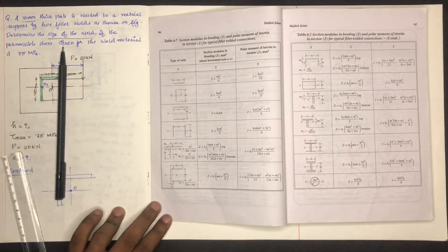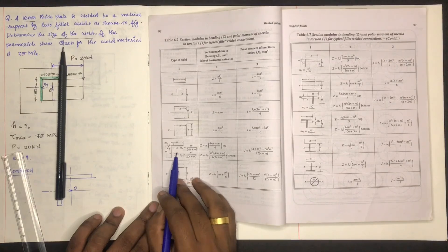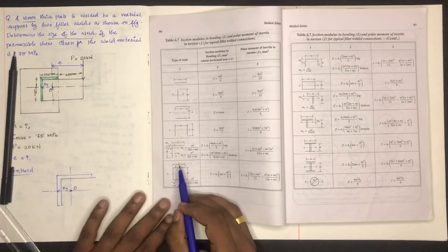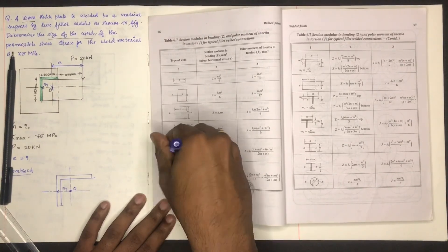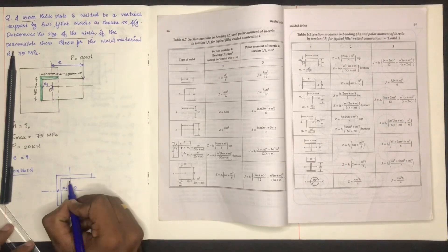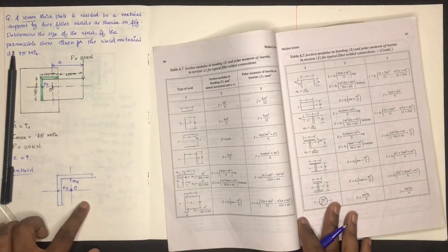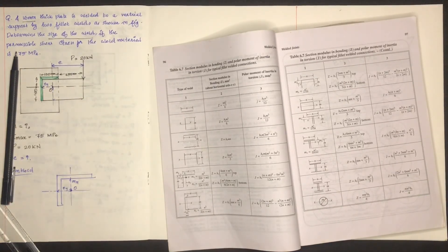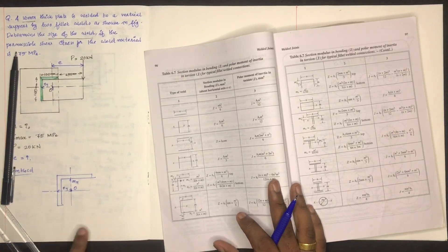In the video, you can find the section from the table. This section is an L shape. Here is the centroid. You can find the centroid from this. If mx and ny are located in the same location, then the equations are available.